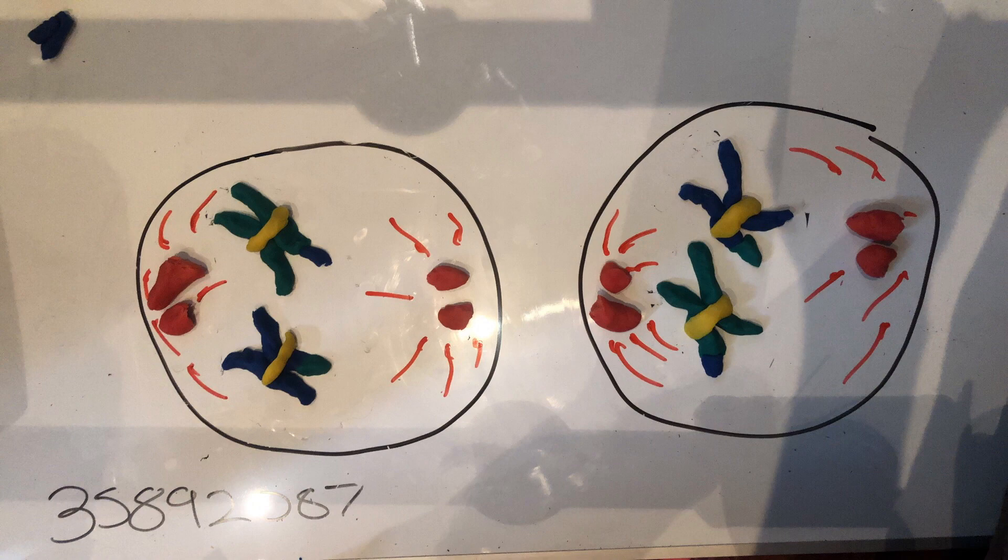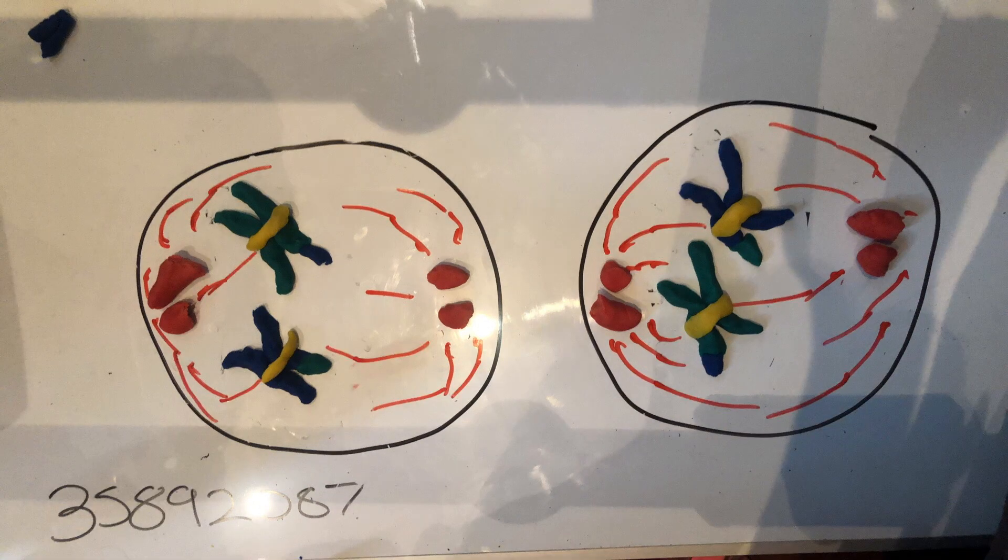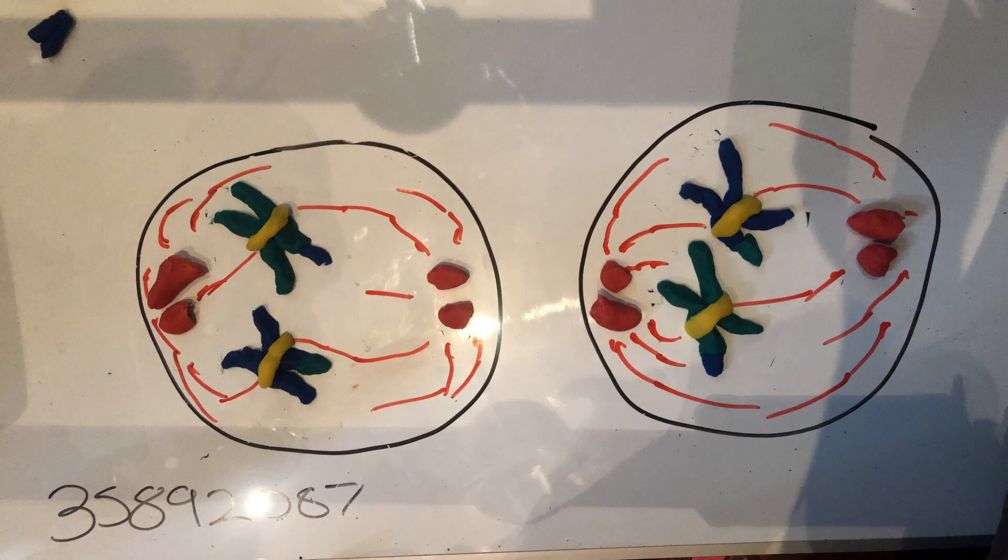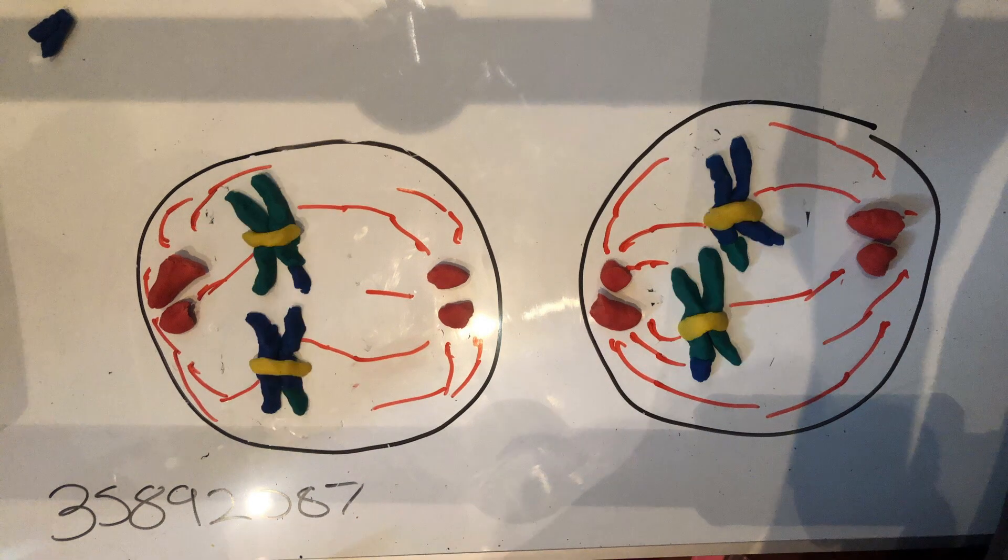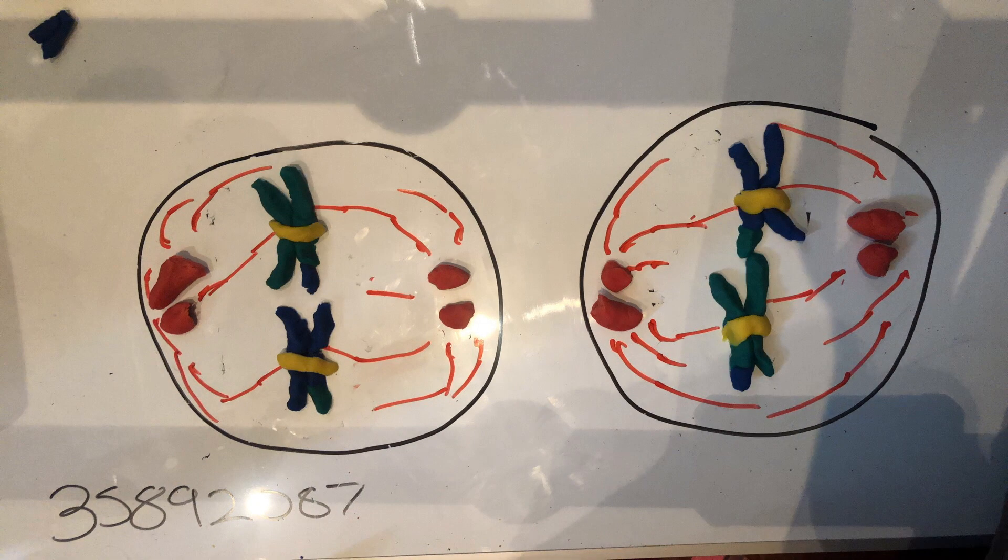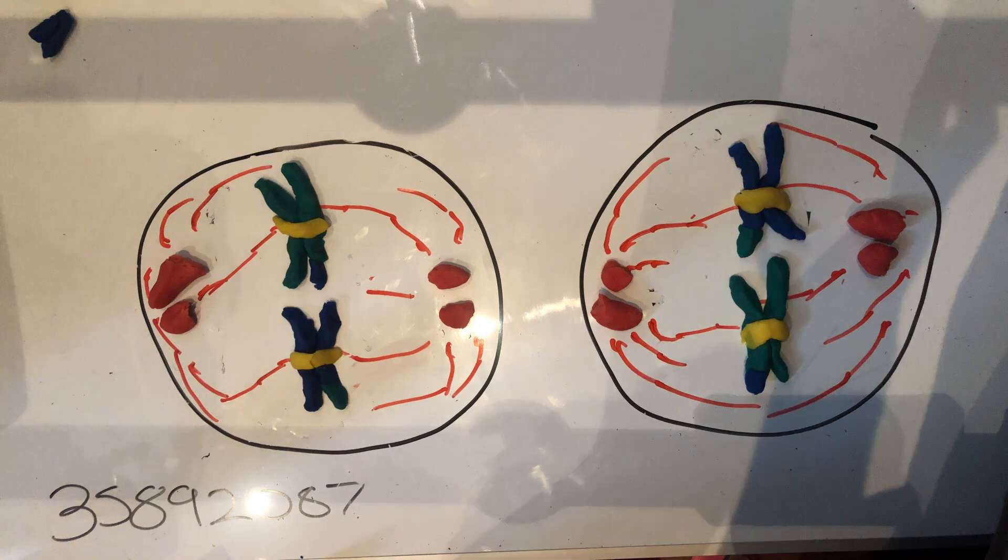In prometaphase 2, the same as prometaphase 1, the spindle fibers attach to each of the sister chromatids via the kinetochore microtubules. Once this process has been completed, metaphase 2 begins. Metaphase 2 is the same as metaphase 1, where the spindle fibers align the sister chromatids on the metaphase plate in either daughter cell.